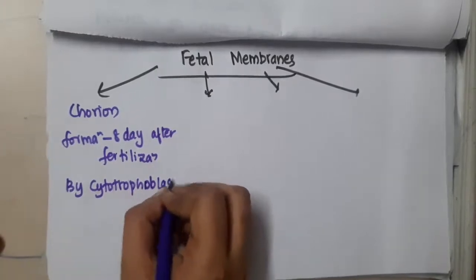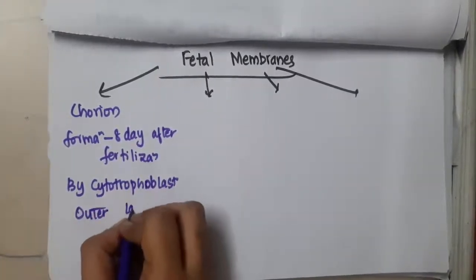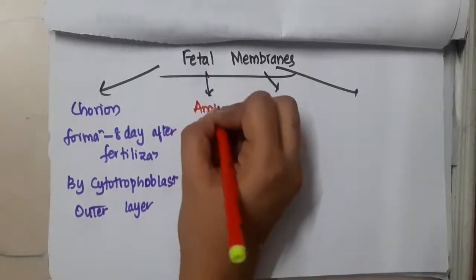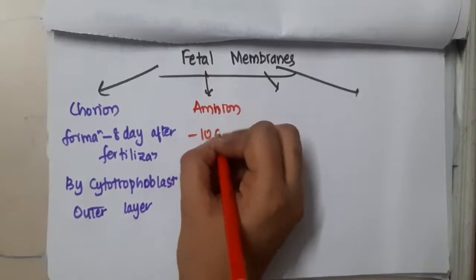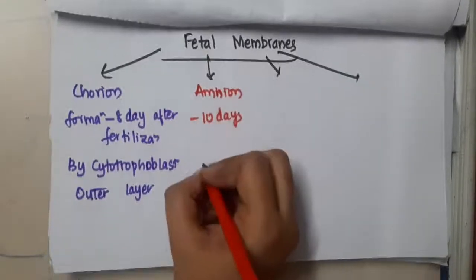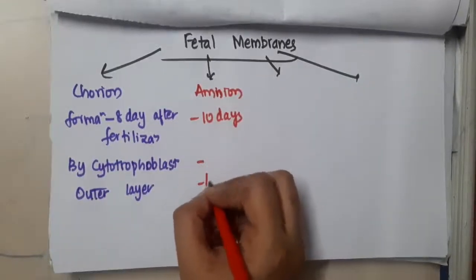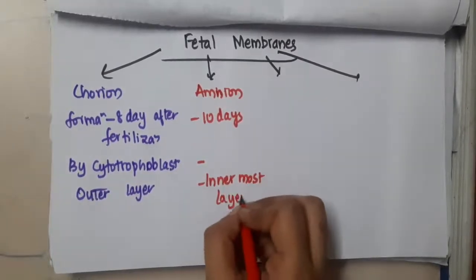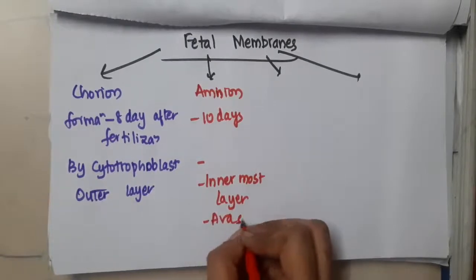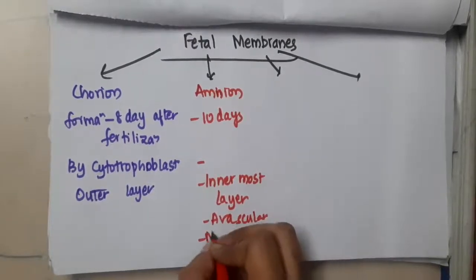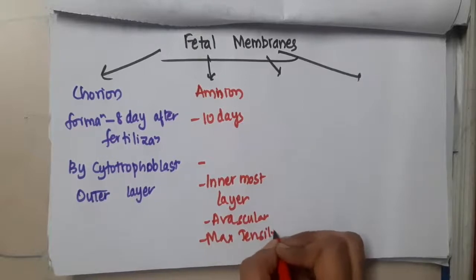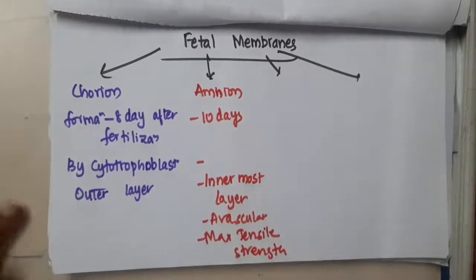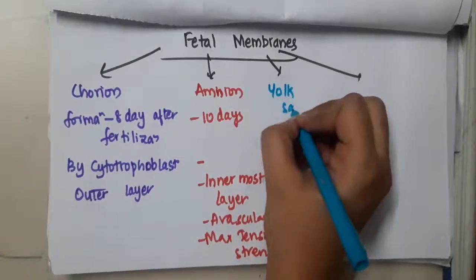Chorion is actually the outer layer. Then we have amnion, which is formed at 10 days after fertilization. Amnion is the innermost layer. It is avascular and has maximum tensile strength.